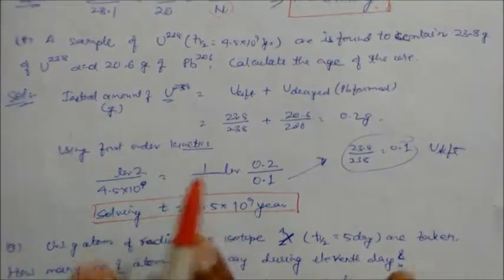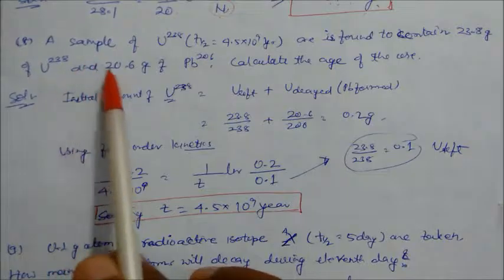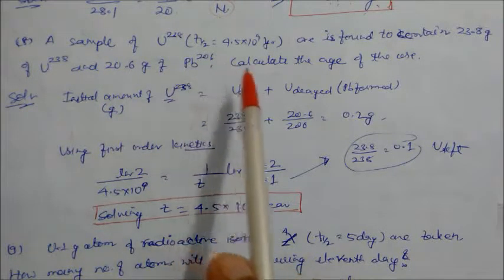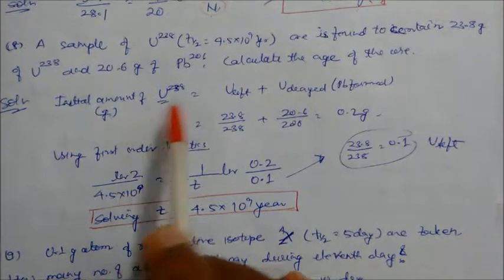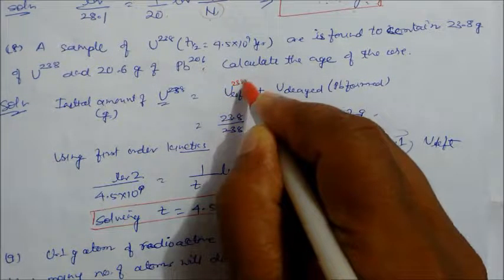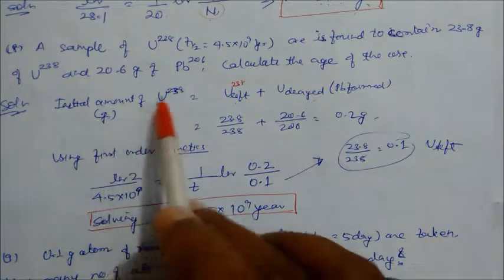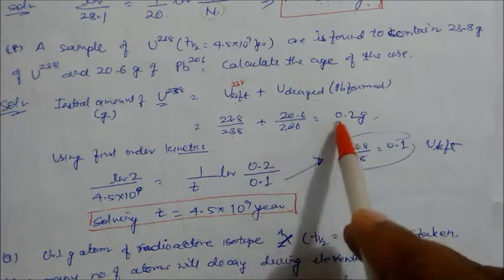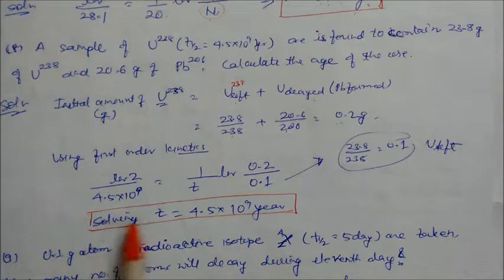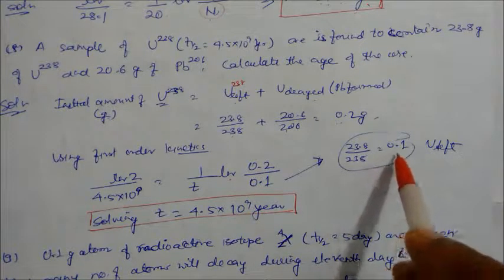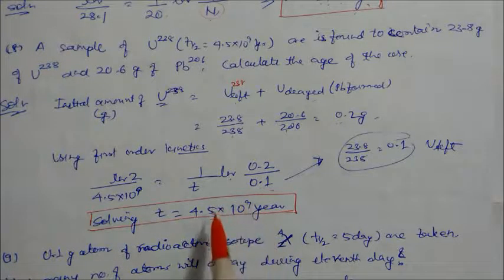Problem 8: A sample of U-238, whose half-life is 4.51×10⁹ years, is found to contain 23.8 grams of uranium and 22.6 grams of lead-206. Calculate the age of the ore. Initial U-238 = uranium left + uranium decayed (which became lead-206). Converting by molar masses: U left = 0.1 moles, total initial = 0.2 moles. Using first order kinetics, the age of the ore is calculated.